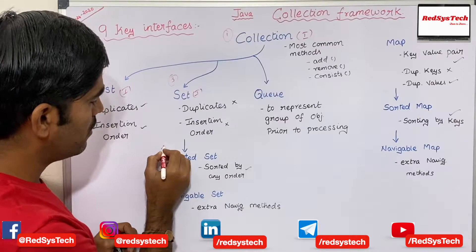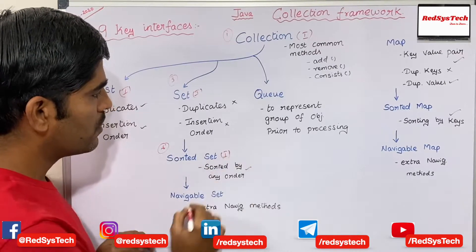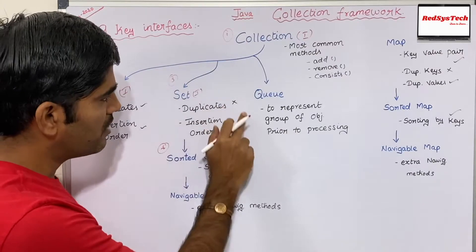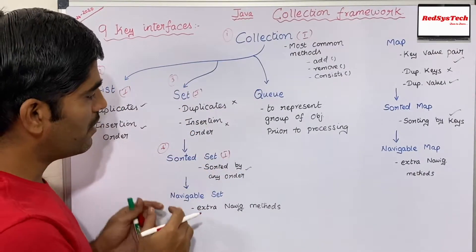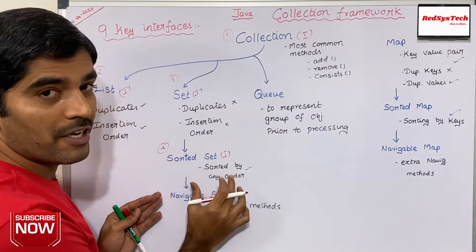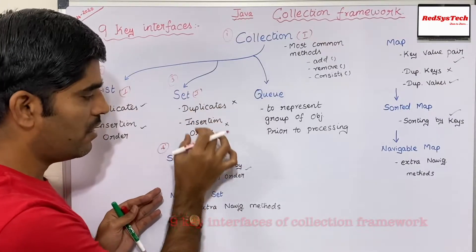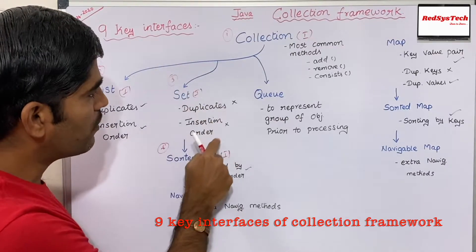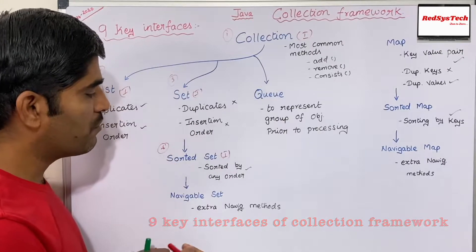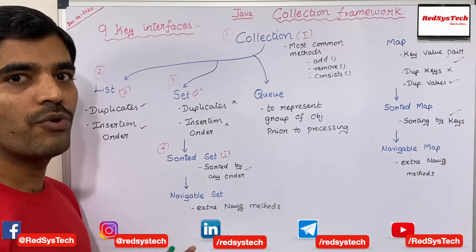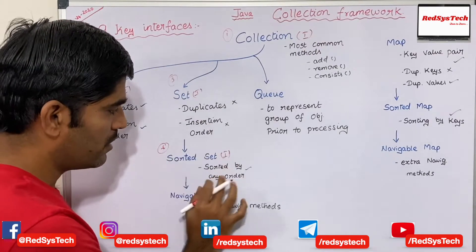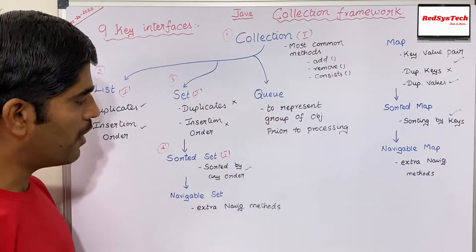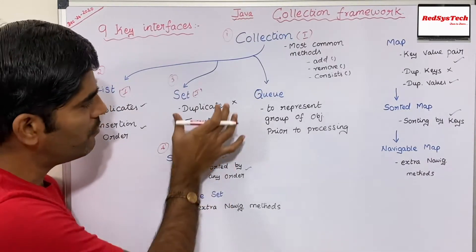The fourth interface is SortedSet, which is a child interface of Set. It has all the features of Set but adds the ability to sort elements by any order — for example, ascending or descending. So if your requirement says you should not allow duplicate elements and you also want to maintain some sorting order, then you can go for SortedSet.